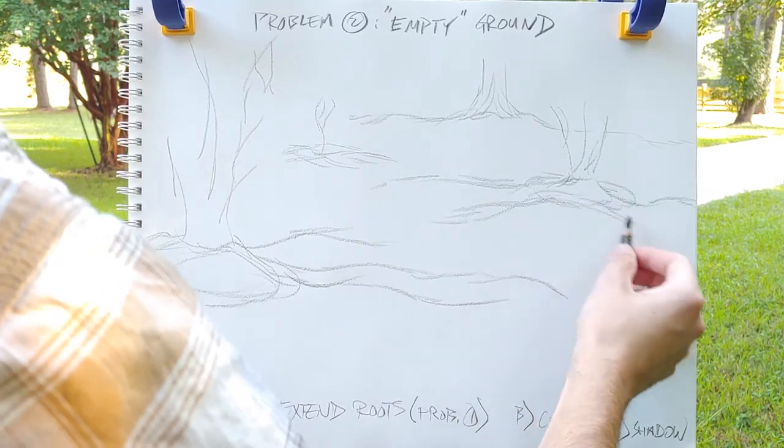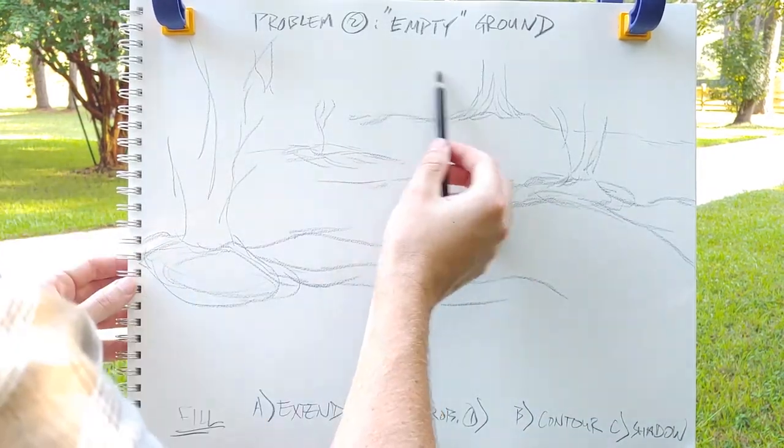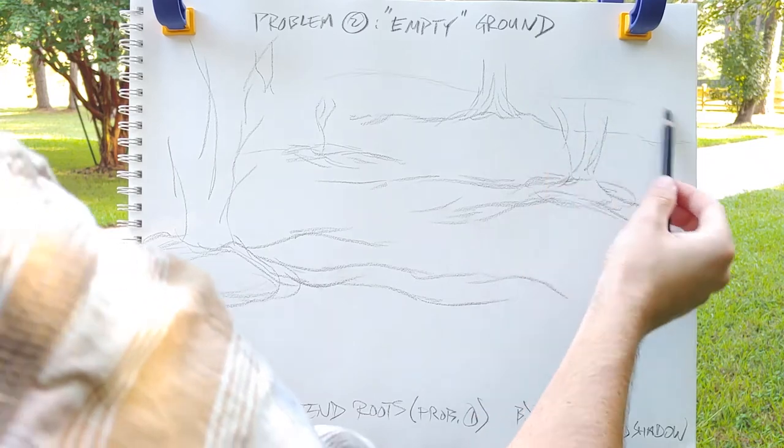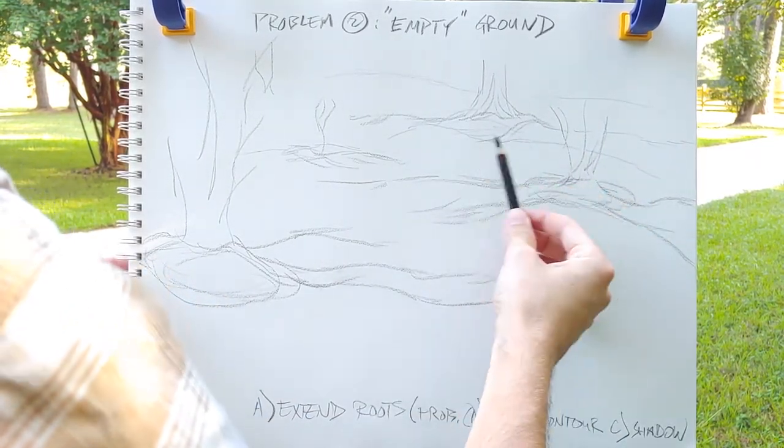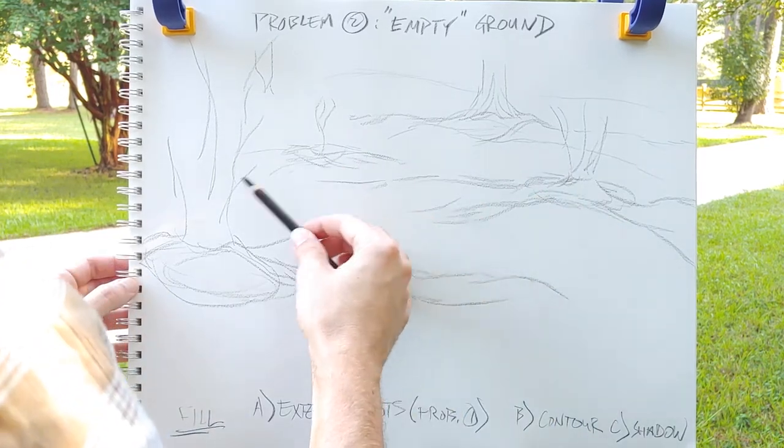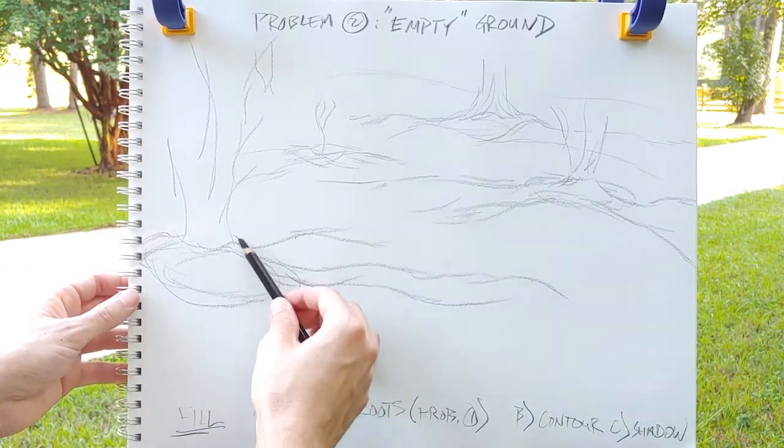Essentially what you're doing is expanding the range of your compositional tools so that you can create a more interesting landscape than you could just by plotting out these different points on the ground.